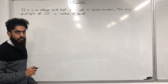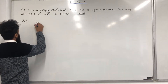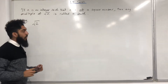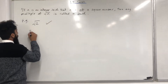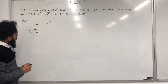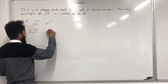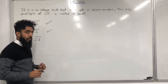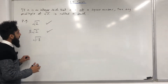Let's have a look at some examples. Square root of 2: 2 is an integer but 2 is not a square number, hence square root of 2 is a surd. 3 square root 2: we know that square root 2 is a surd, and 3 square root 2 is a multiple of square root 2, hence 3 square root 2 is a surd. Square root of 13: 13 is an integer but 13 is not a square number, hence square root of 13 is a surd.